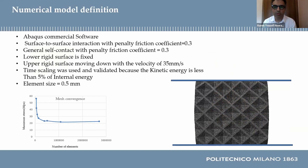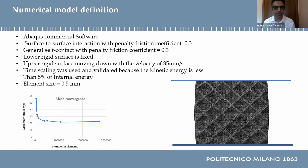Abaqus commercial software was used to create numerical models. The structure is sandwiched between two rigid surfaces, and a surface-to-surface interaction with a penalty friction coefficient of 0.2 was set for the interaction of the lattice and surfaces. A general self-contact with the same coefficient was set to prevent cell penetration. The lower surface is fixed, while the upper one moves down at 45 mm per second velocity. Time scaling was used and validated because the kinetic energy is less than 5% of the internal energy. The mesh size was set to 0.5 mm and was validated by a mesh convergence analysis.